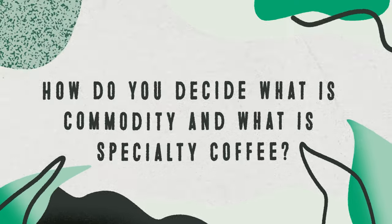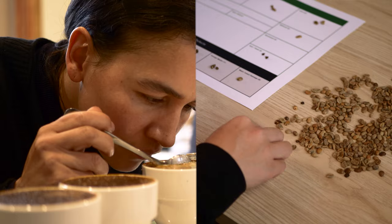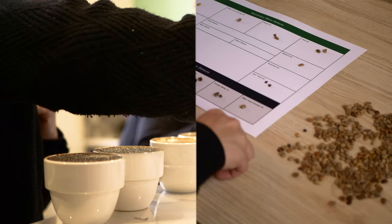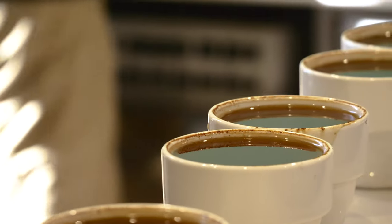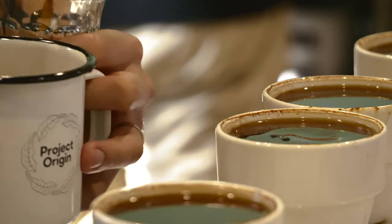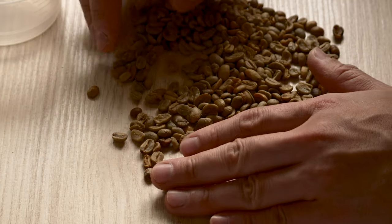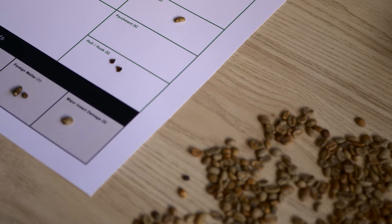How do you decide what is commodity and what is specialty coffee? Coffees are assessed by coffee cupping and green bean grading. Coffee cupping focuses on how coffee tastes, while green bean grading looks at the physical attributes of the beans, such as appearance, moisture content and density. Let's explore some of these assessments.